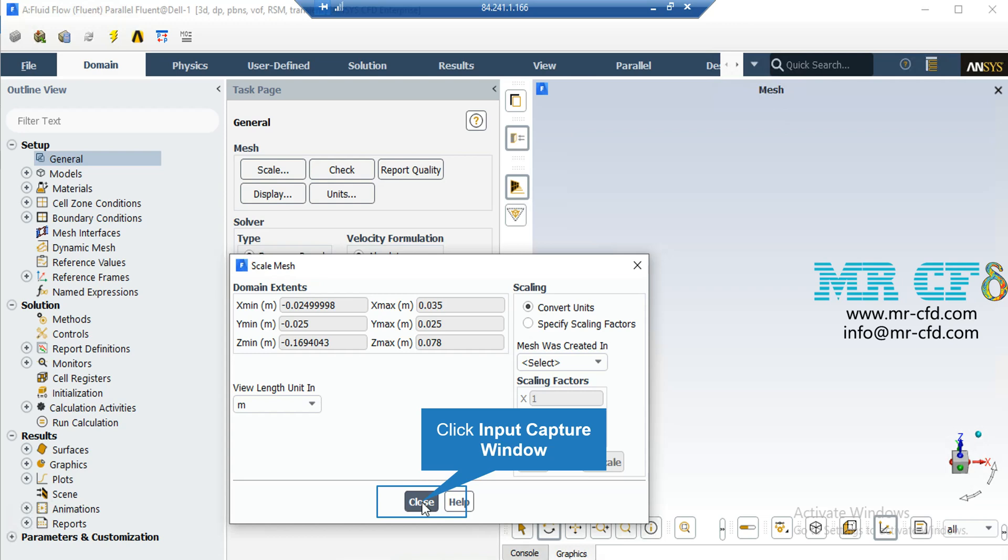Also, under the scaling section, under the mesh was created in, you can change the settings in order to activate the scaling factors beneath that. For example, your geometry and mesh was designed in a software which its default unit was millimeters.